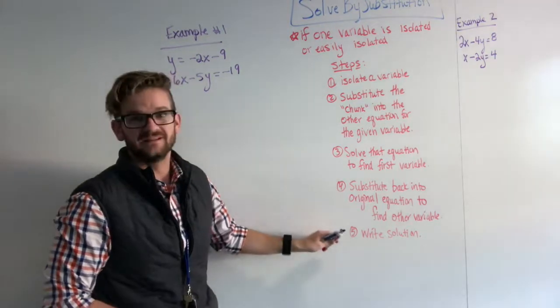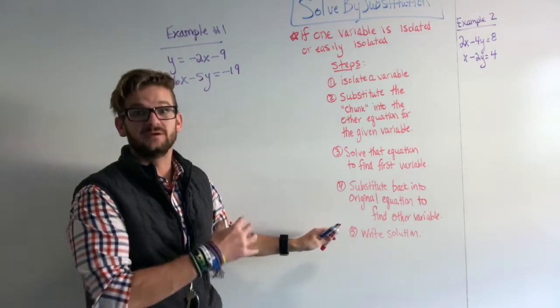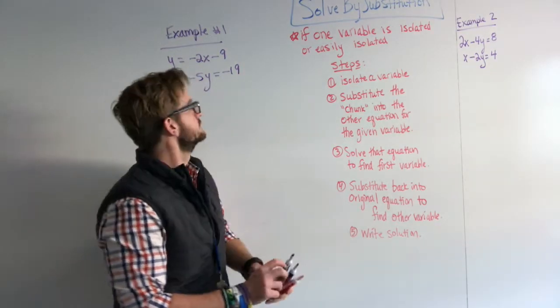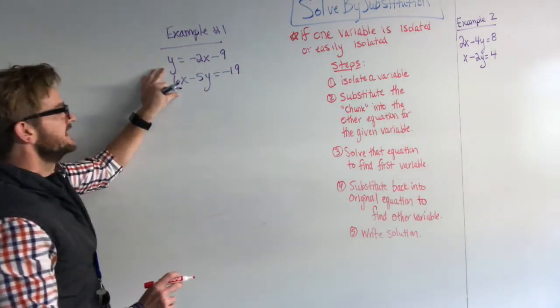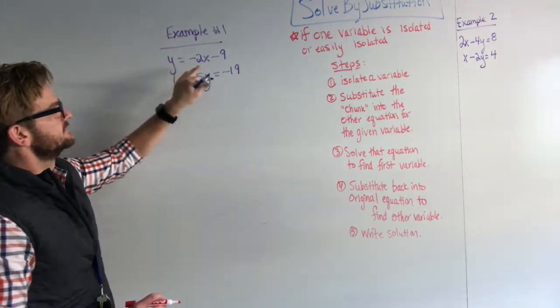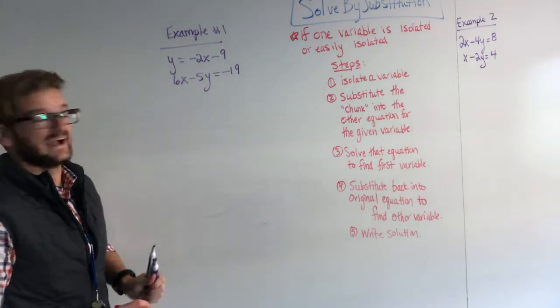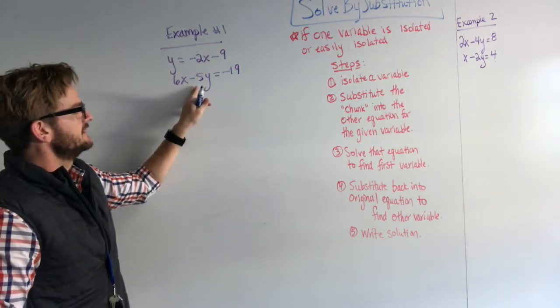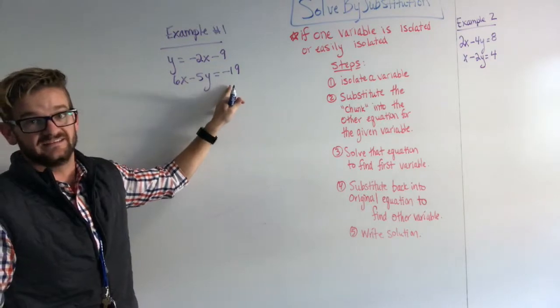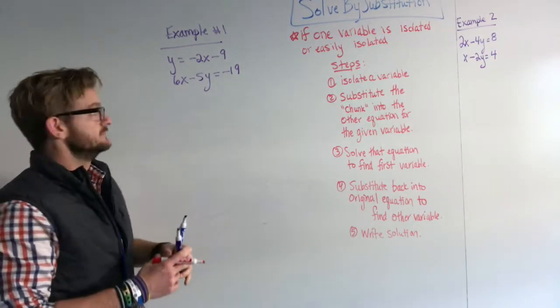We have some steps here in the middle that we're going to be reviewing as we go through the example problems. We're going to start with the first example. In this example, we have y equals negative 2x minus 9, and then we have 6x minus 5y equals negative 19. We're trying to solve this system of equations.